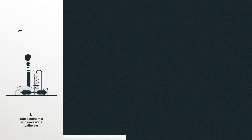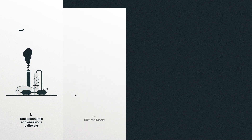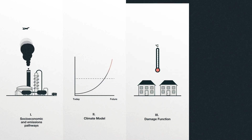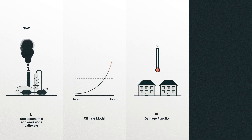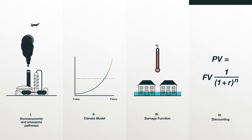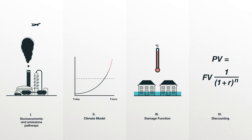The key steps are: producing estimates of future emissions and economic growth; turning those into projections of future physical climate change; turning those projections into estimates of human impacts and associated economic damages; and then discounting them into a present value dollar amount.